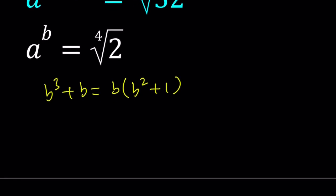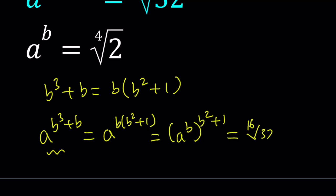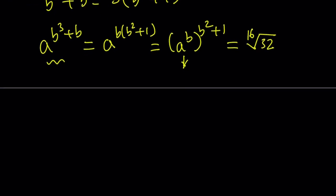First of all, let's go ahead and start with the first one and write this as a to the power b times b squared plus 1. And then now this can be turned into a to the power b to the power b squared plus 1. And we know that this expression is equal to the 16th root of 32 because it's given in the problem. But we also know that a to the power b is equal to the 4th root of 2. So we can go ahead and replace a to the power b with that.